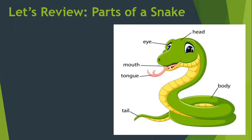I found another green snake. Let's take a look. Let's read from the left side to the right. Eye. If there are two, we will say 'eyes' with an S.